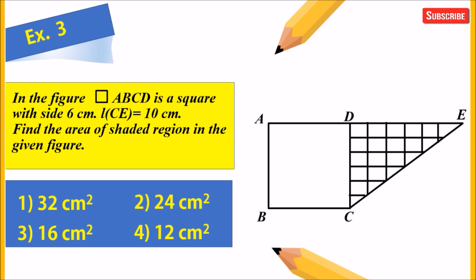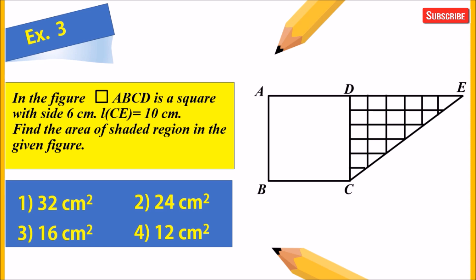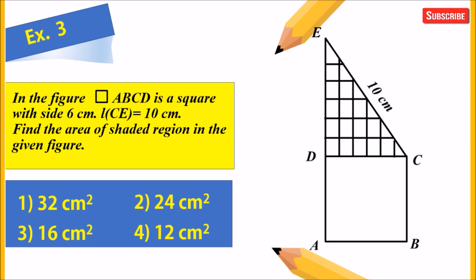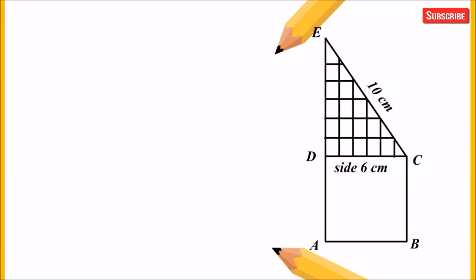Example 3: In the figure, quadrilateral ABCD is a square with side 6 centimeter. The length of CE is 10 centimeter. Find the area of the shaded region. Options are: 32, 24, 16, and 12 centimeter square. Let us turn the figure, put in the given values — CE is 10 centimeter and the side is 6 centimeter — and wipe the extra parts.